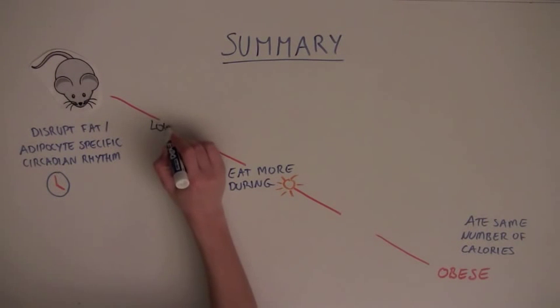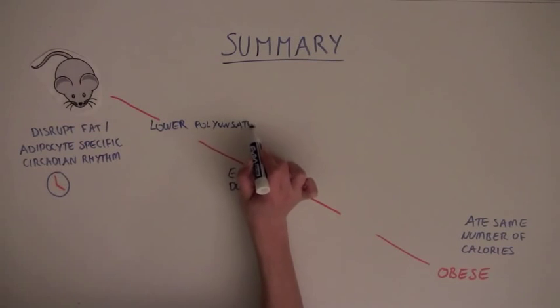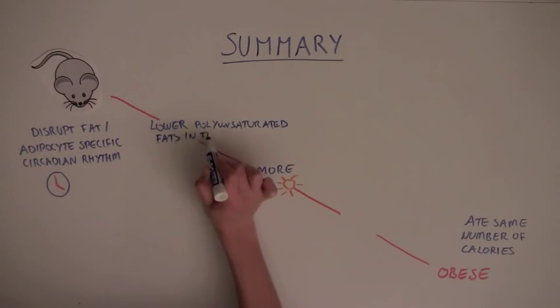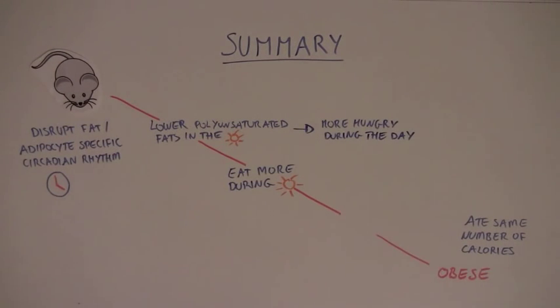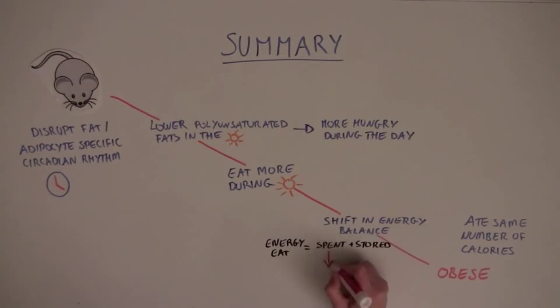This is because a disrupted circadian rhythm in the adipocytes causes lower levels of polyunsaturated fats in the blood during the day. This makes the mice more hungry during the day, when feeding is normally low. For mice, eating more during the day instead of at night causes a shift in the energy balance, and energy is stored instead of spent, leading to obesity.